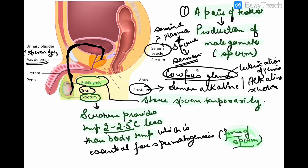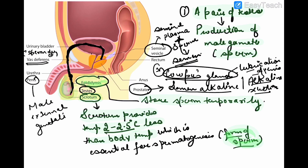To summarize: the seminal vesicle secretes seminal plasma which along with sperm forms semen; the prostate gland releases alkaline secretion into the sperm; and Cowper's gland lubricates the penis. The penis is the male external genitalia and serves as the common passage for both urine and semen.